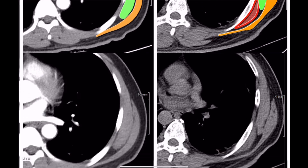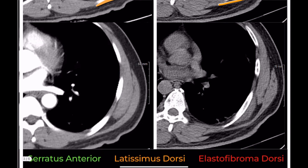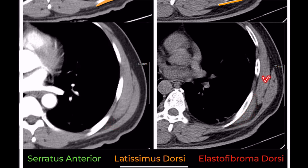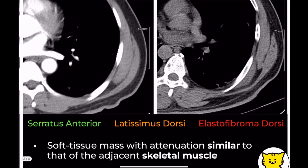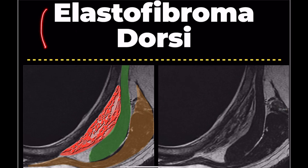Elastofibroma dorsi is usually easy to identify when compared to normal anatomy. However, on CT scans, it appears as a poorly defined soft tissue mass with attenuation similar to adjacent skeletal muscle, making it easy to overlook.